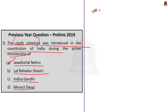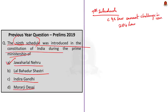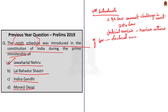As you know, the ninth schedule contains a list of central and state laws which cannot be challenged in court. Currently, 284 such laws are shielded from judicial review under this ninth schedule. Judicial review is the power of the court to examine actions of the legislative, executive and administrative arms of government and determine whether such actions are consistent with the constitution — actions judged inconsistent are declared unconstitutional and null and void. This schedule became part of the constitution only in 1951. Currently the Indian constitution has 12 schedules, but originally it had only 8.